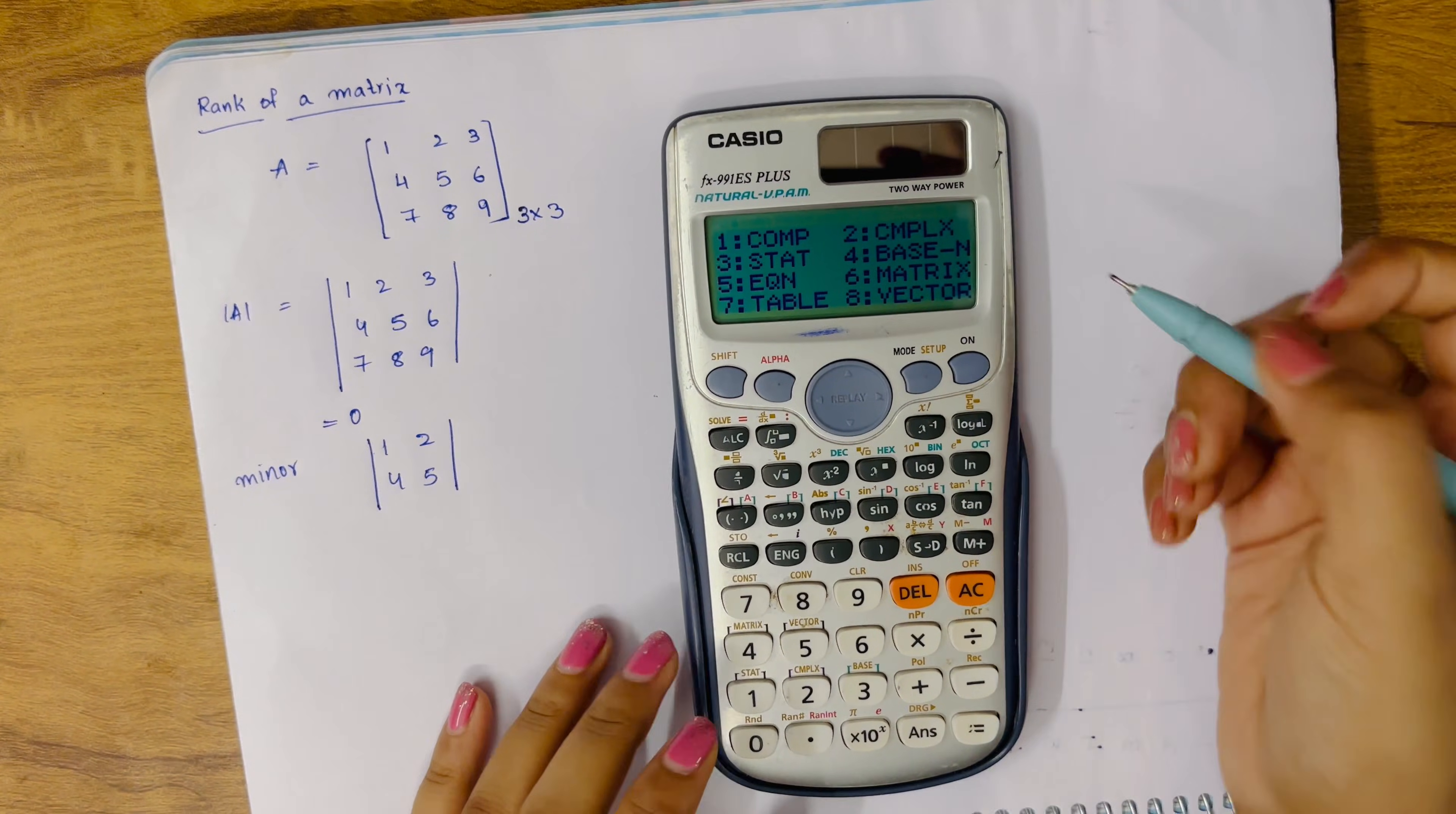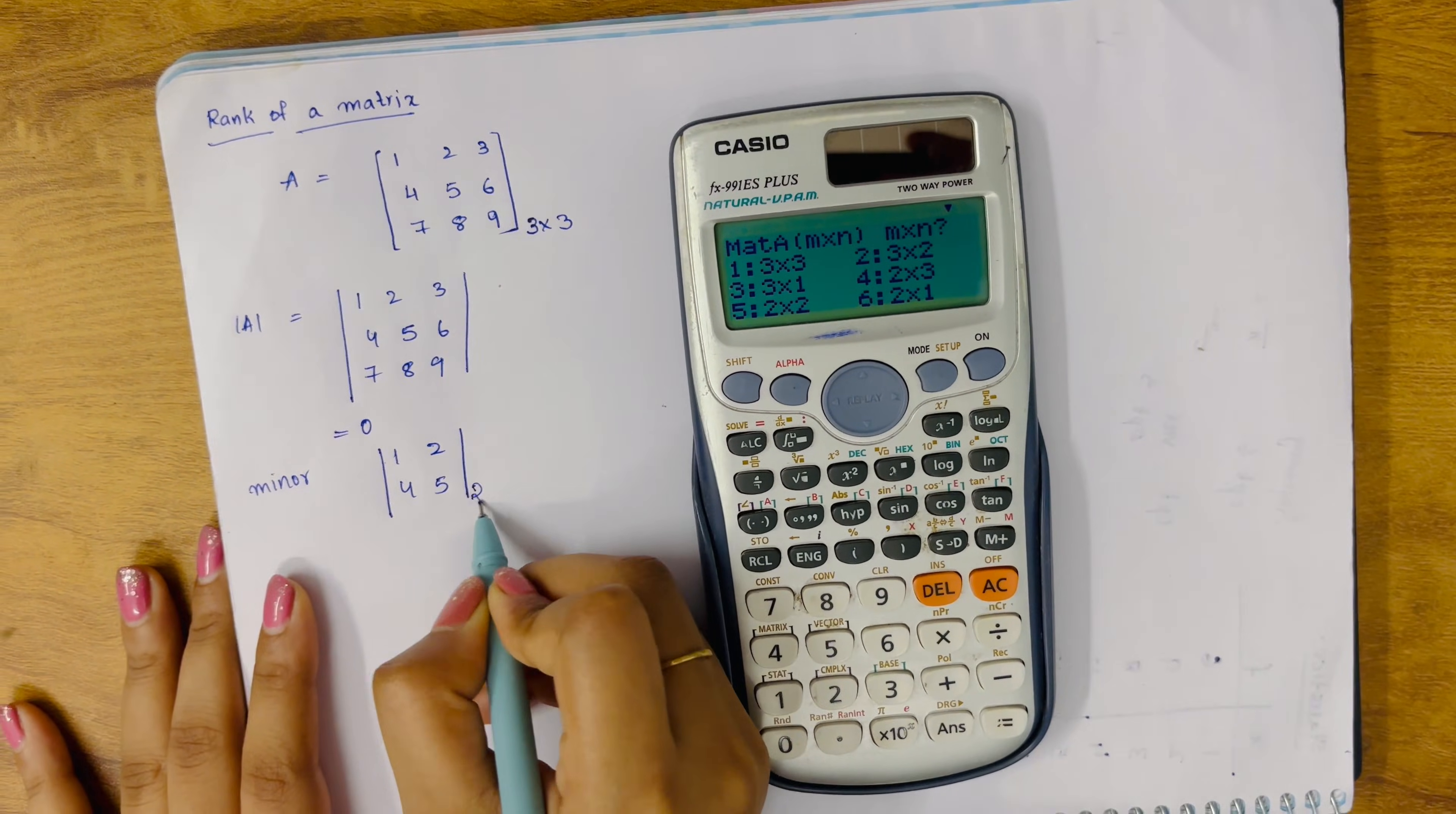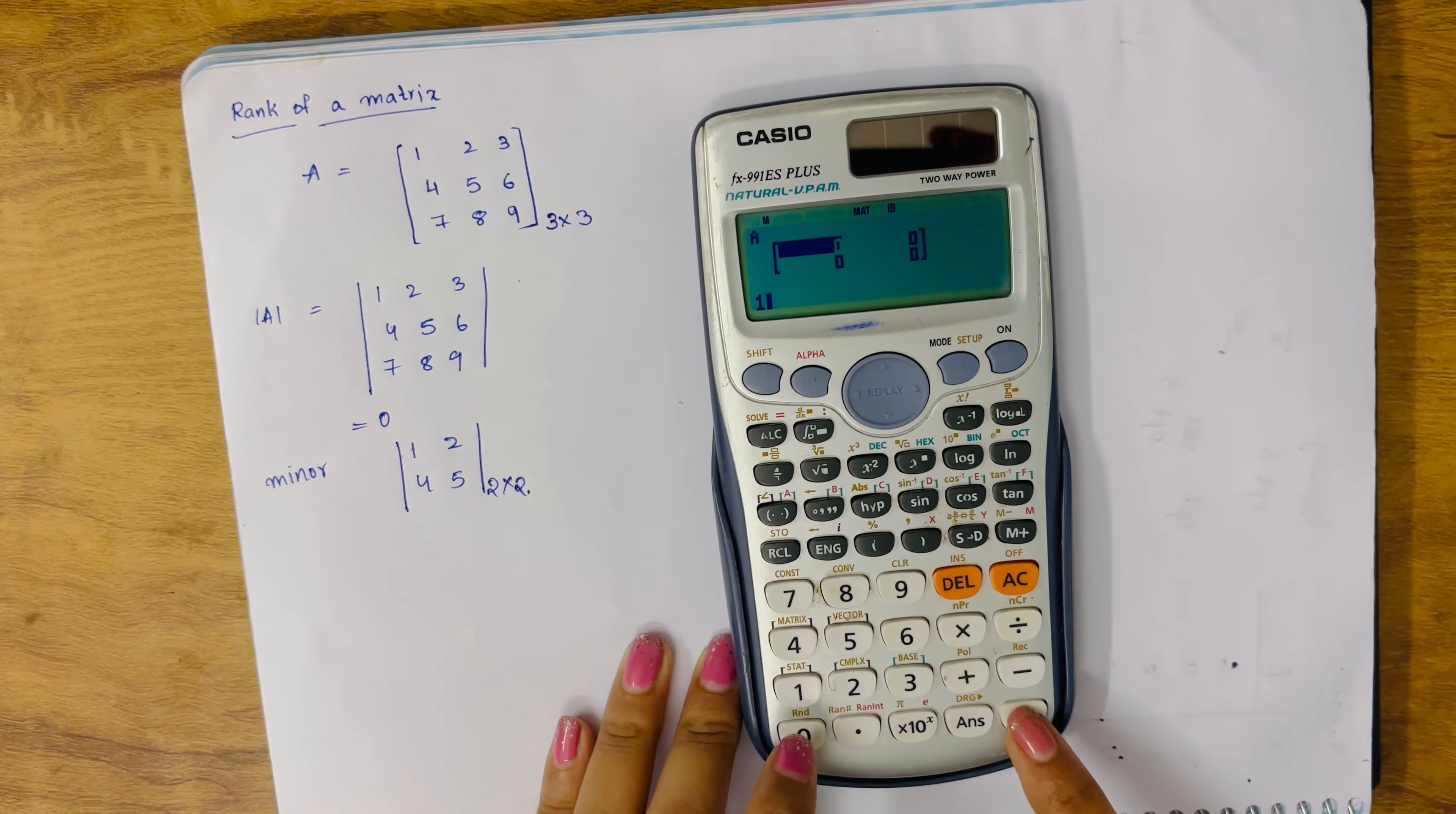Mode, setup, again go to matrix, that is 6. We are defining a matrix Mat A. Now it is a 2 by 2 matrix, so option 5. Click on that.